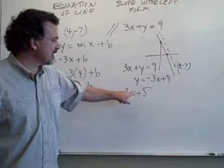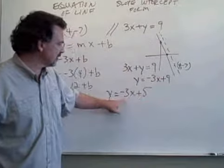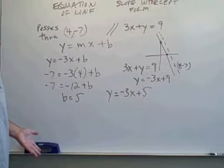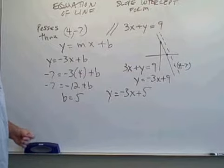Notice it has the same slope as this line. Both have a slope of negative 3. They have different y-intercepts.